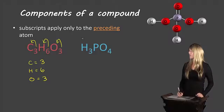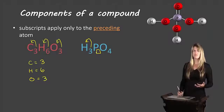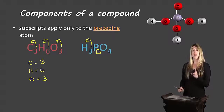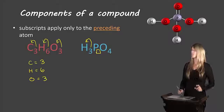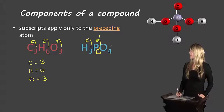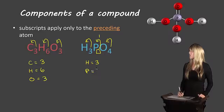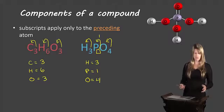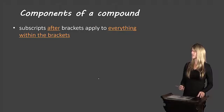Let's take a look at another example. In H3PO4, this three applies only to the preceding H. Now, the phosphorus doesn't have a subscript — when there is no subscript, that indicates one. So there is one phosphorus. The four applies to the oxygen. So: hydrogen equals three, phosphorus equals one (because there was no subscript), and oxygen equals four. That is our first rule.